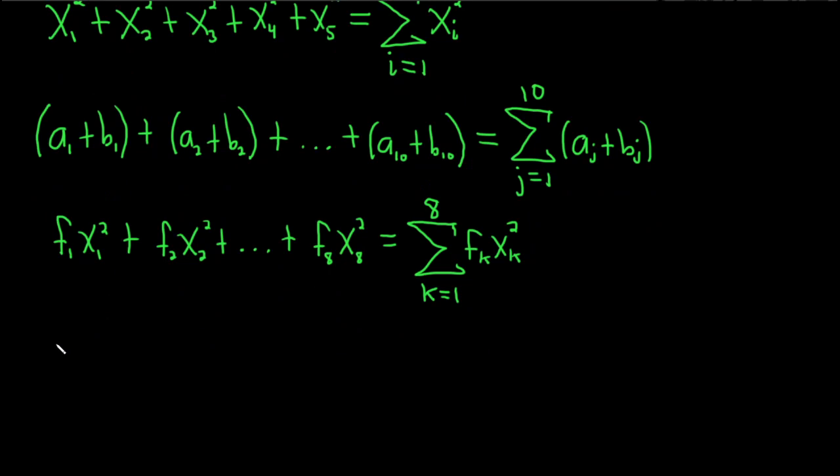Sometimes we can have stuff even like this. Let's say we have f₁x₁y₁ plus f₂x₂y₂, plus dot, dot, dot, plus, and let's just say it's fₙxₙyₙ.